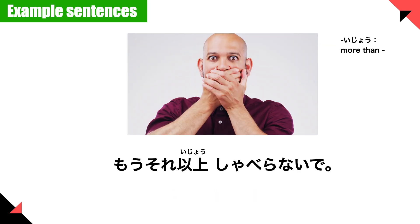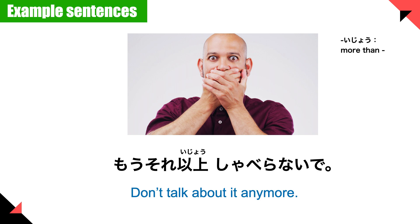Next example sentence: もうそれ以上しゃべらないで — don't talk about it anymore. もう plus negation in a negative sentence means 'don't anymore' or 'not anymore.' それ以上 means 'more than that.' So もうそれ以上しゃべらないで means 'don't talk about it anymore — more than that.'